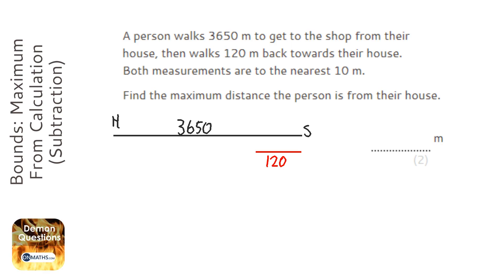at home at the moment - they're on their way home. We're asked to find the maximum distance the person is from their house. If we didn't understand bounds, we would do 3650 take away 120.